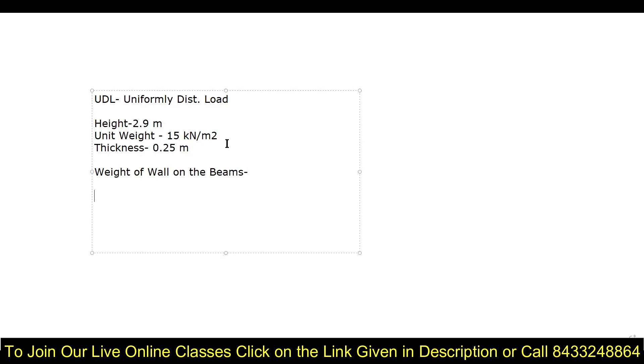When giving UDL in Tekla Structural Designer or any structural design software, this is basically the weight of the wall on the beams. To calculate it: height × unit weight × thickness = 2.9 × 15 × 0.25, which gives approximately 10.9, so roughly 11 kN/m. That's how we calculate the unit weight of the wall on the beams.